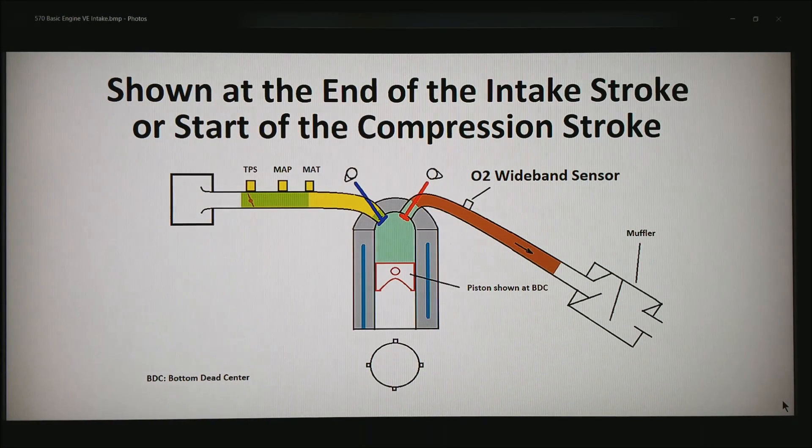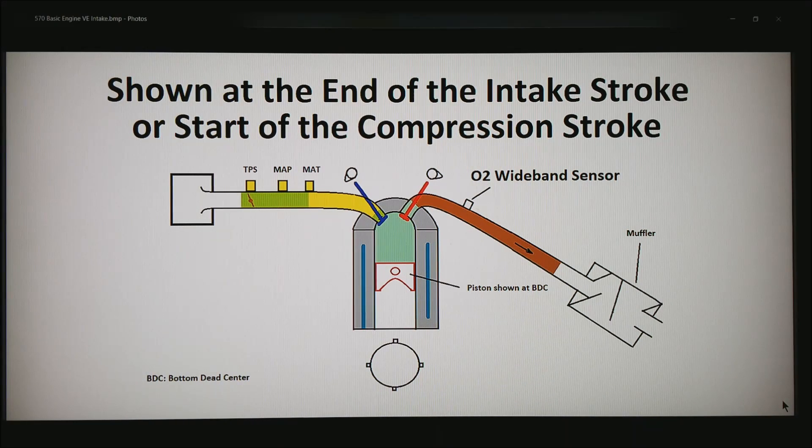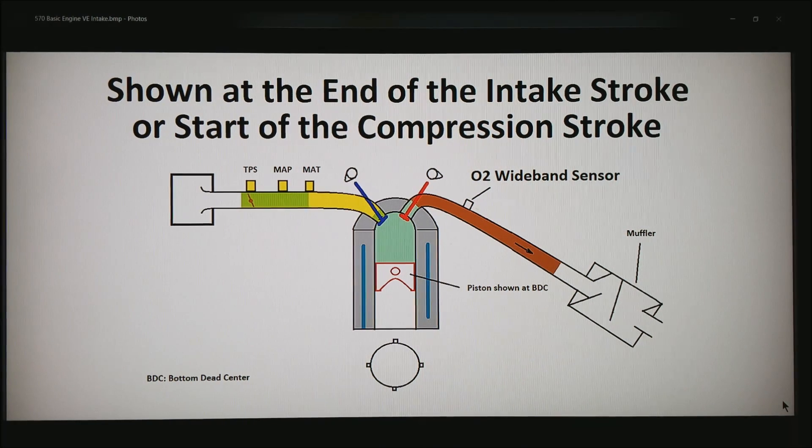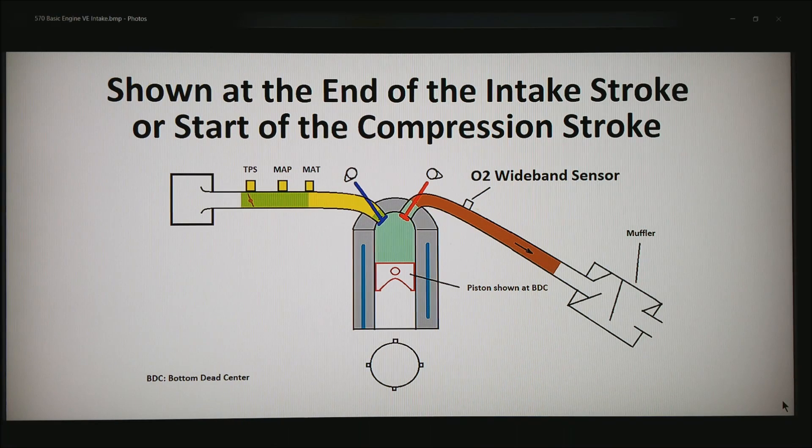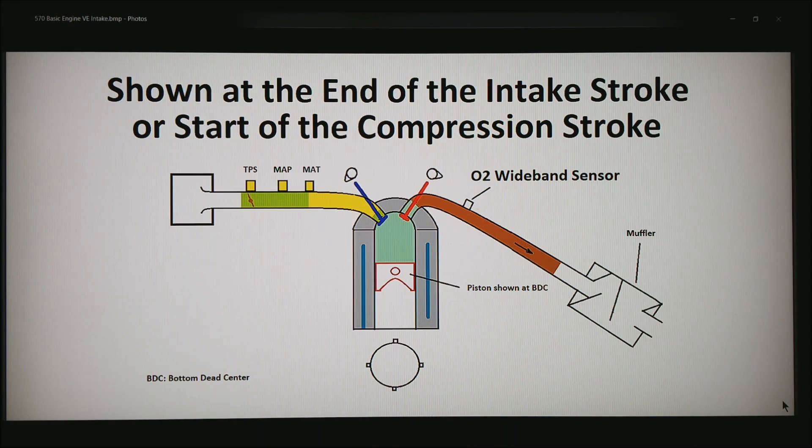So 100 percent of what you thought you were going to get all gets compressed and burned. It turns out this happens pretty much only at the torque peak of the motor at full throttle, and we'll get into this later. It's impossible to design the perfect exhaust system and the perfect intake to make all this happen as desired at every RPM and throttle position.